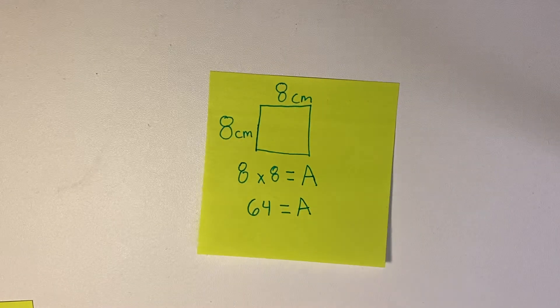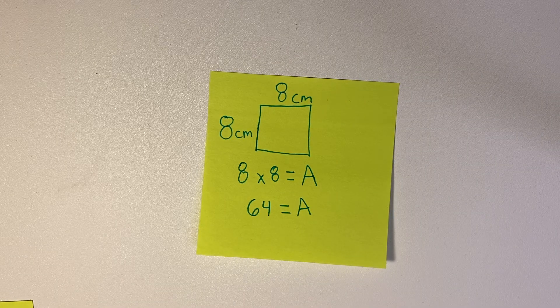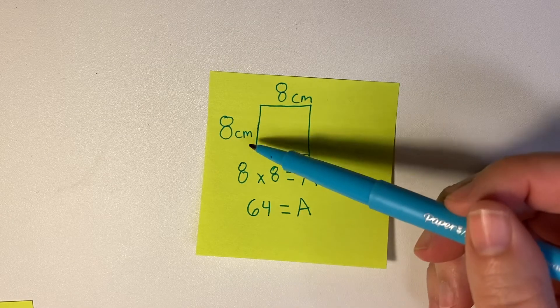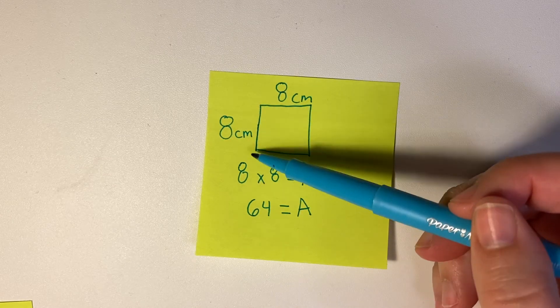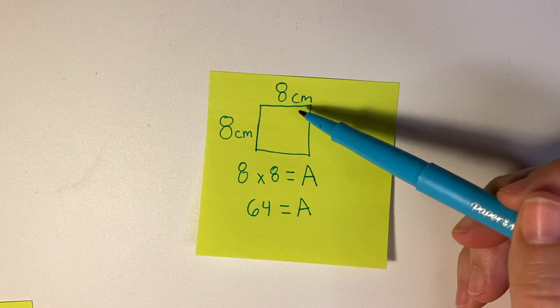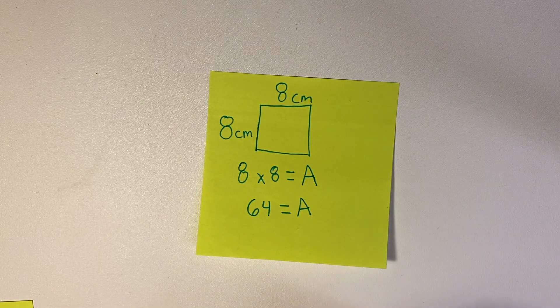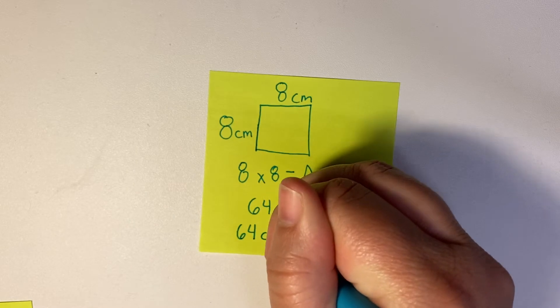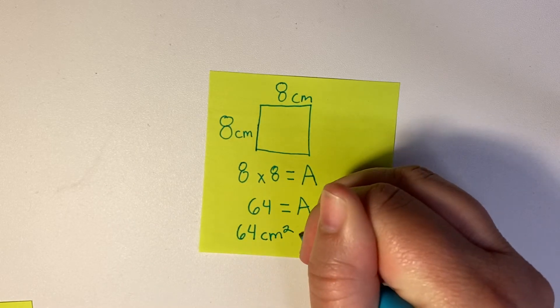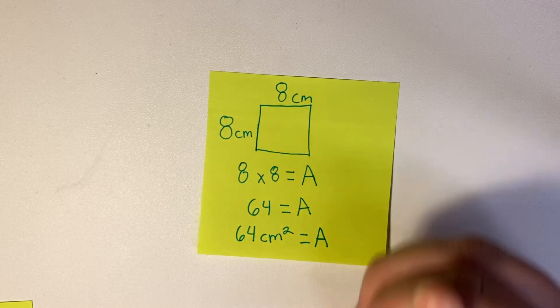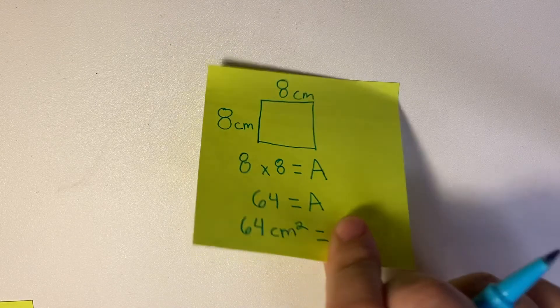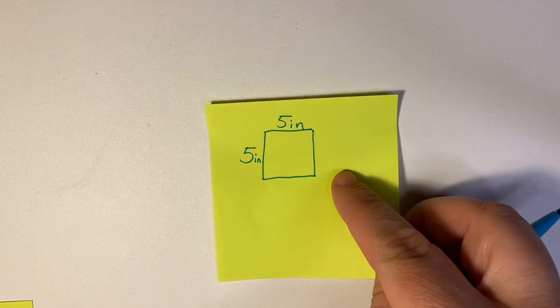So our area equals 64. But it's not just 64, because it's not 64 in length. It's 64 of these little squares that are filling in that big square, so it's going to be 64 centimeters squared.